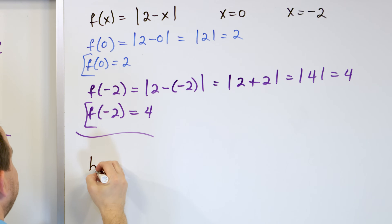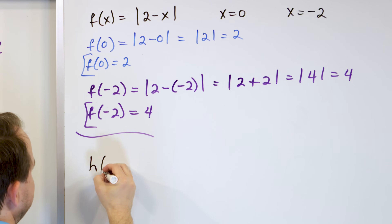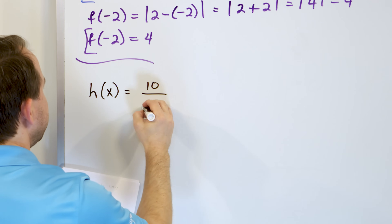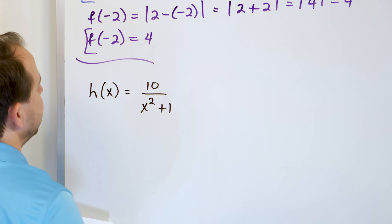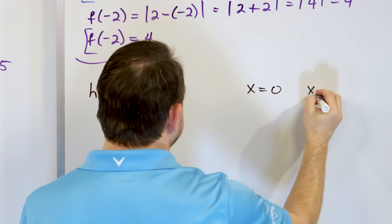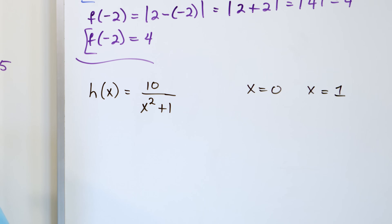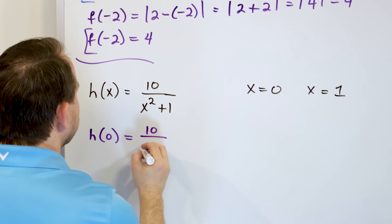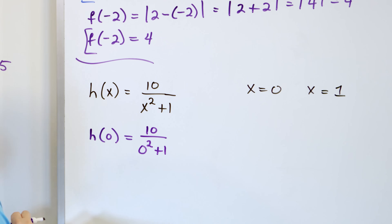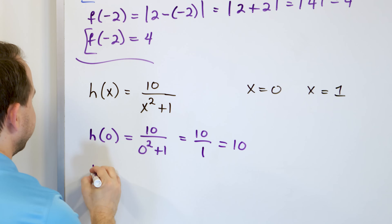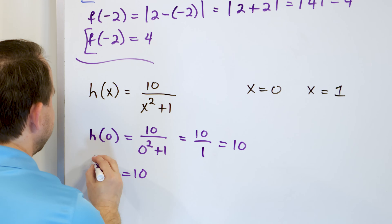What if you had the function h of x equal to 10 divided by x squared plus 1 — a more complicated-looking function that you'd have to plot points to figure out. Let's evaluate it at x equals 0: h of 0 is 10 over 0 squared plus 1, which is 10 over 0 plus 1, giving 10 over 1, so h evaluated at 0 is 10.